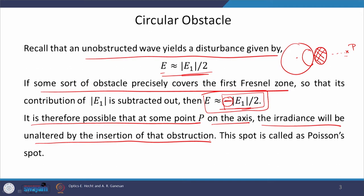This spot is called the Poisson spot. It was Poisson who first proposed this problem and first observed such behavior in the case of this circular obstacle. This is why it is called the Poisson spot.